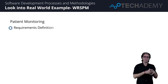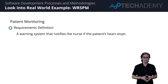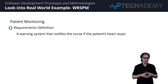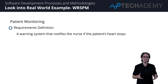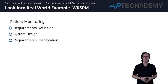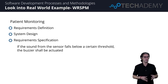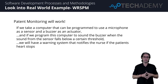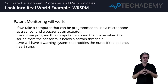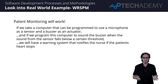Here's patient monitoring: the requirements definition. We write down that we want a warning system that notifies the nurse if a patient's heart stops — that's what the user wanted. We then talk about our system design: we can make a computer using a microphone as a sensor and a buzzer as an actuator. With this system design, we could then talk about this requirement specification: if the sound from the sensor falls under a particular threshold defined based on the user's need, this buzzer is actuated. If the computer is programmed properly to buzz the buzzer once the sound falls below the threshold, we will have a warning system through which the nurse is notified.